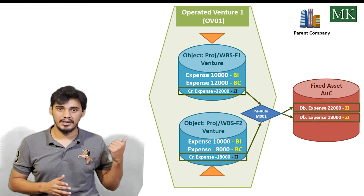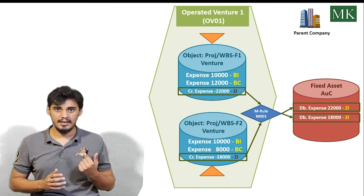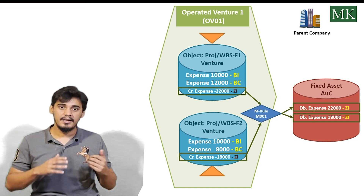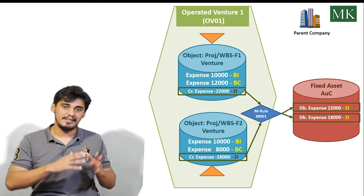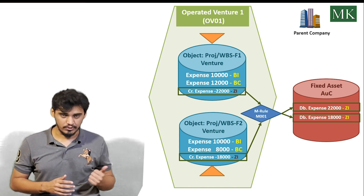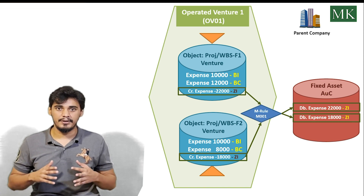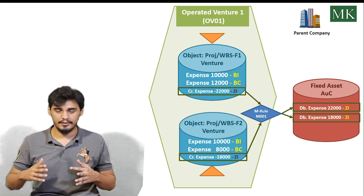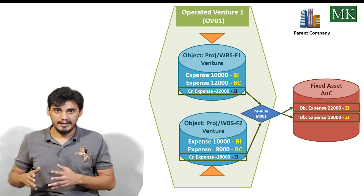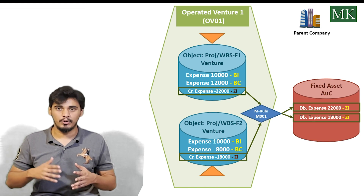As you can see in the picture, the receiver AUC and fixed asset is posted with recovery indicator ZI with amounts 22,000 and 18,000. This is the functionality of the recovery indicator manipulation rule during settlement. This settlement scenario will also be covered in an upcoming video on project settlement.